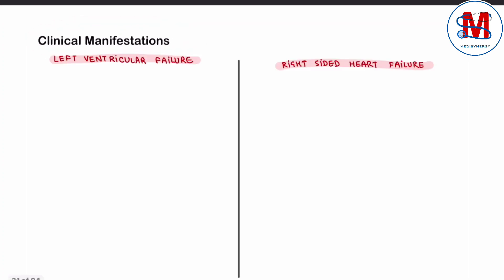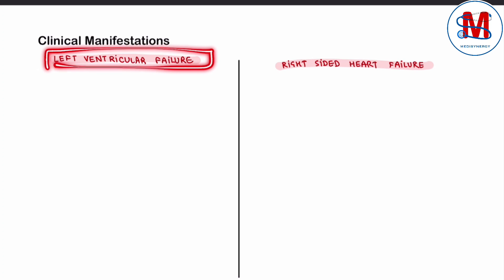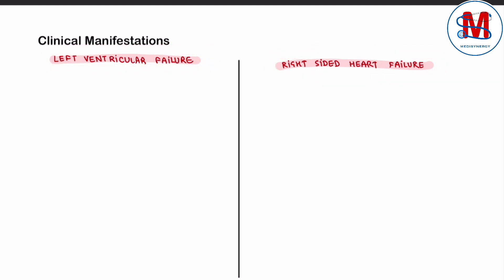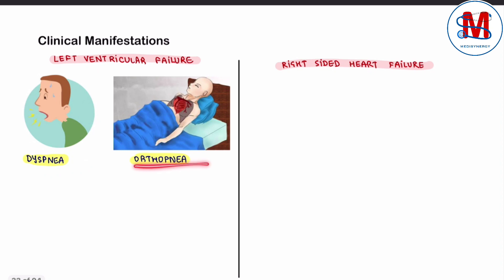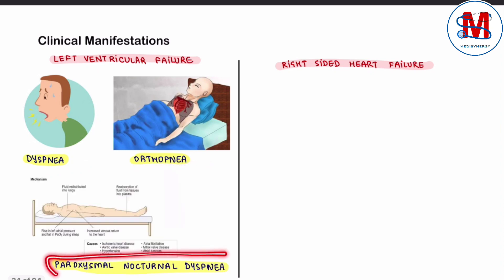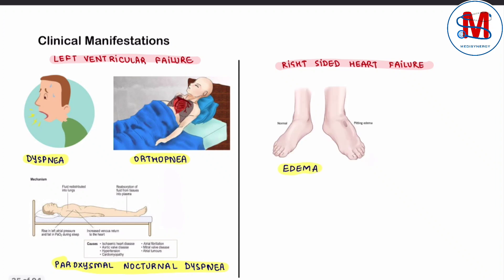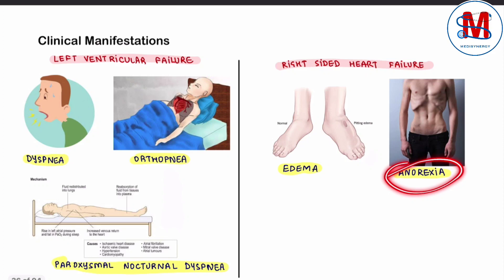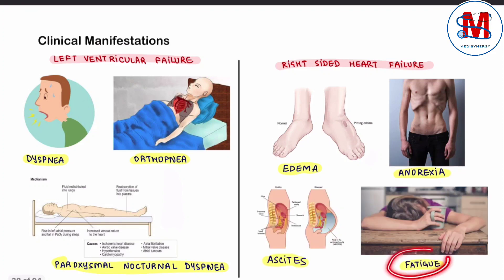Now we talk about clinical manifestations. We have two categories: left ventricle failure and right-side heart failure. Left ventricle failure presents with dyspnea, orthopnea, and paroxysmal nocturnal dyspnea. Right-side heart failure presents with edema, anorexia, ascites, and fatigue.